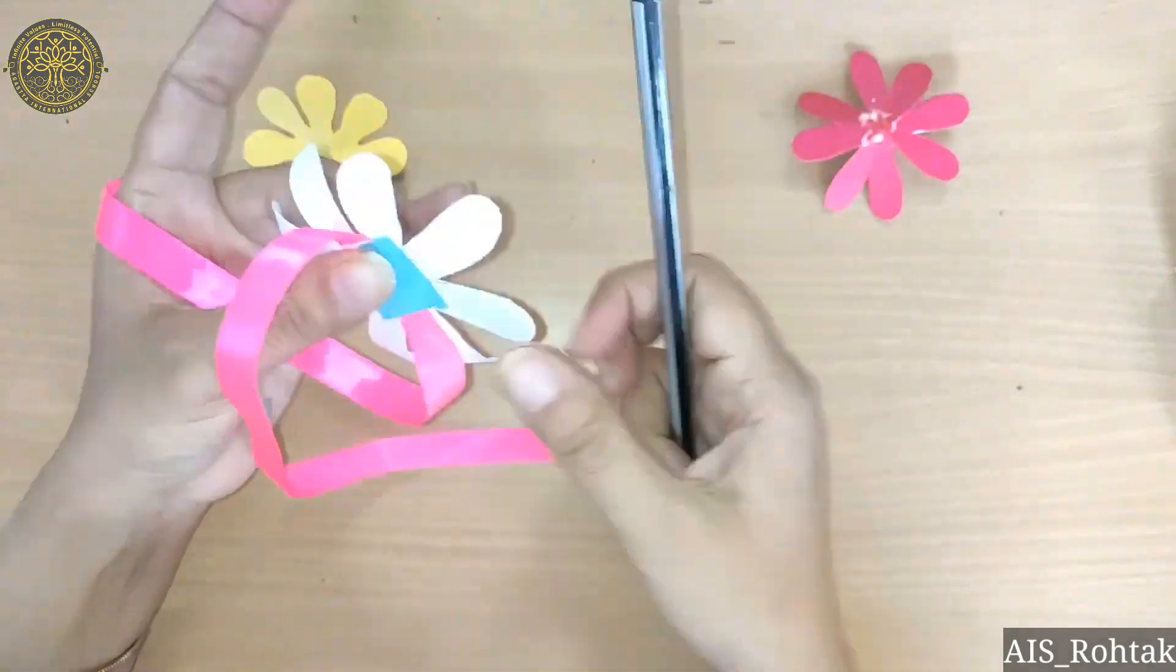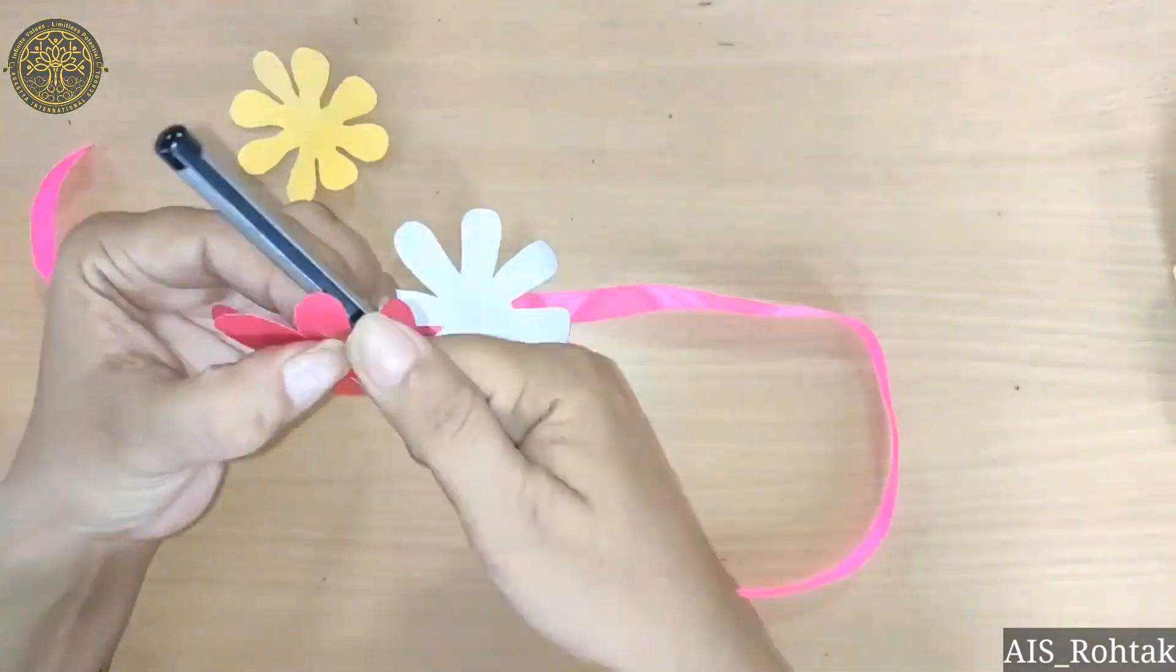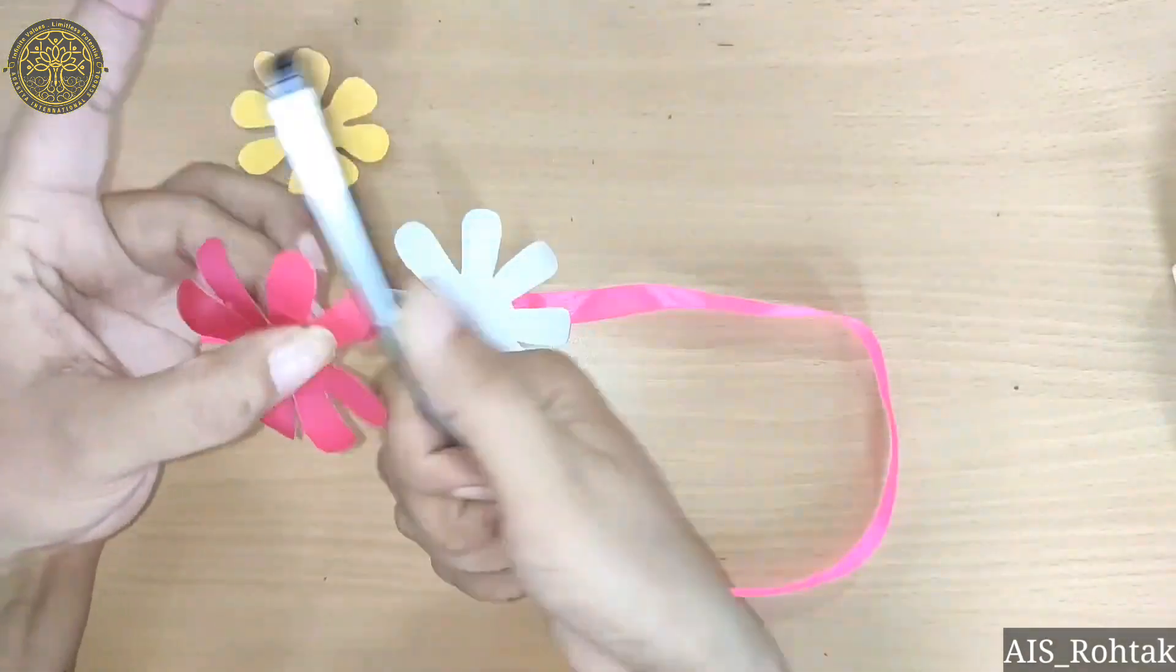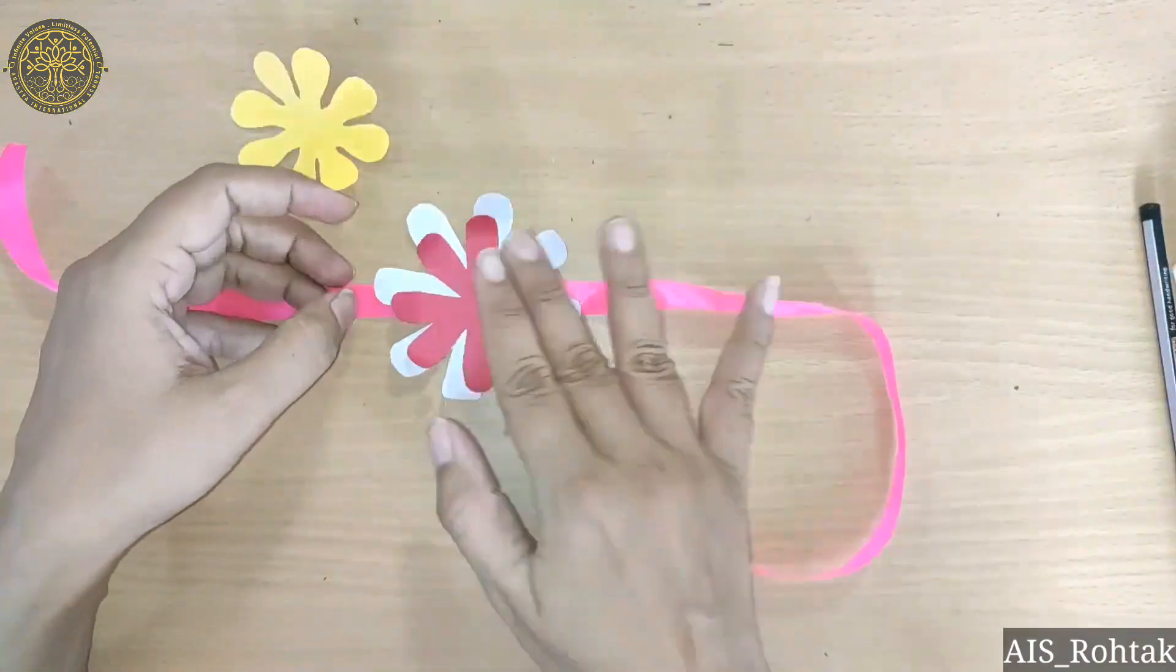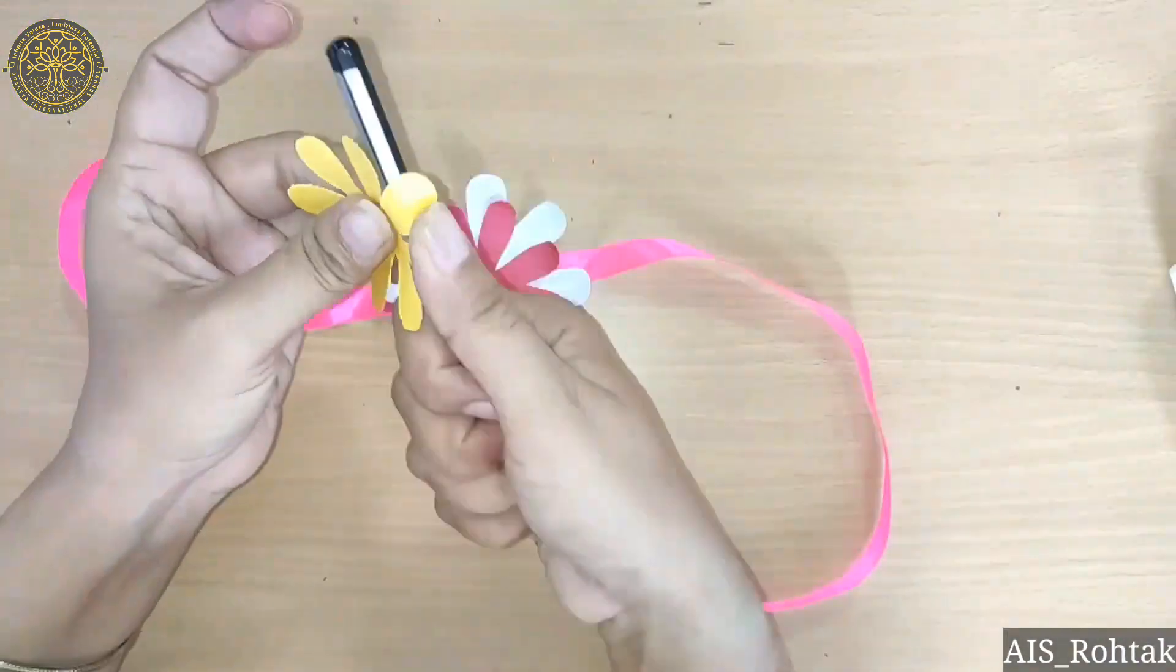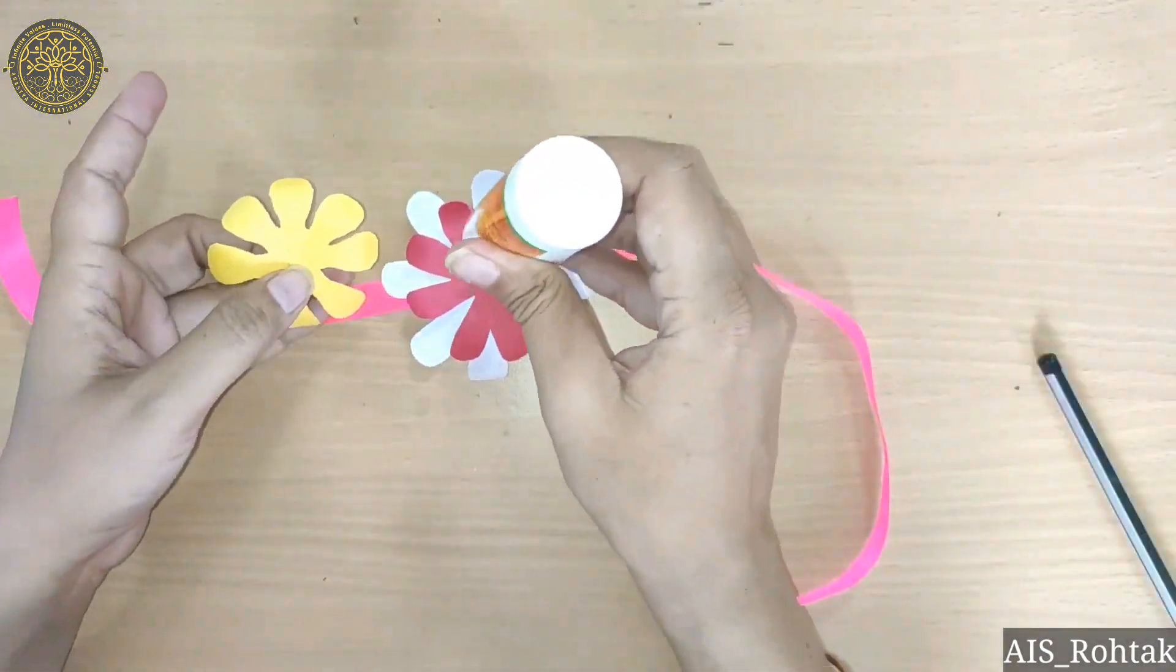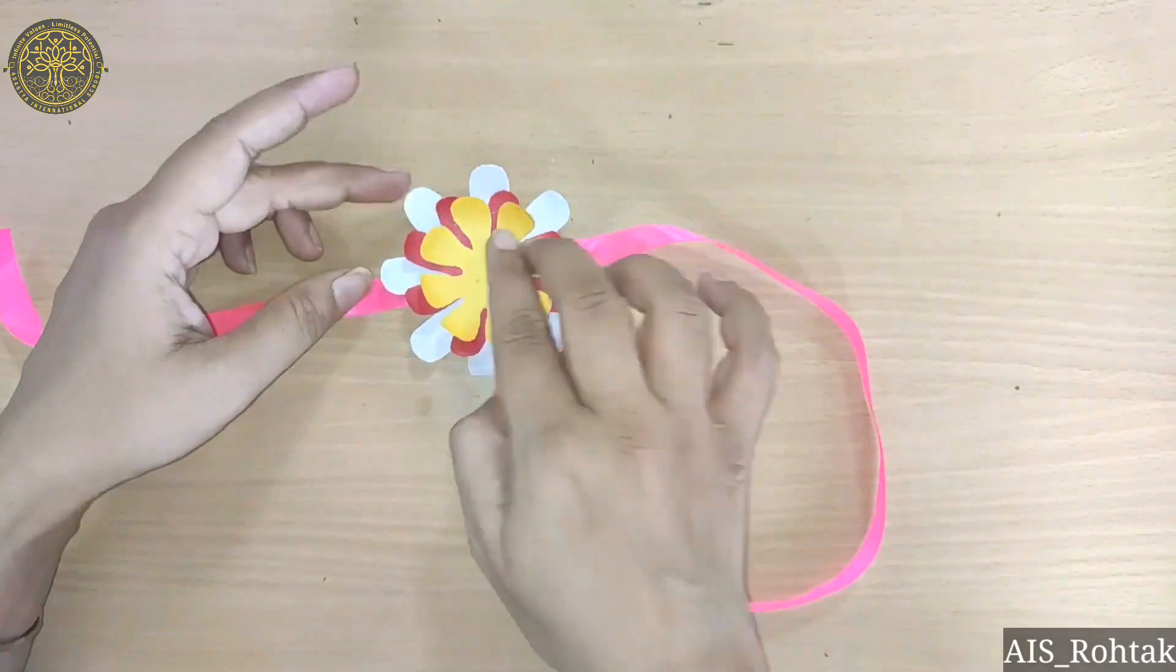Then we will stretch it with the pencil and bend it. Same with the red color. Like this, and paste in the center of the white flower. Same with the stretching. We have to do the same with the yellow color. And then we paste in the center of the red flower.